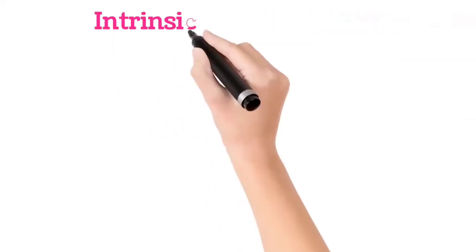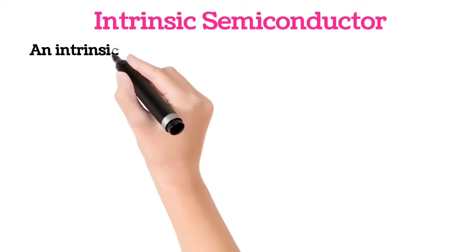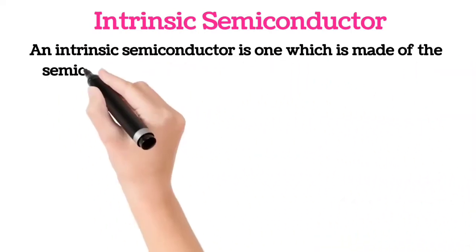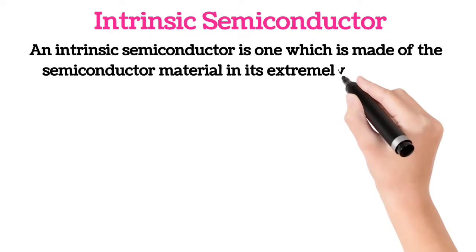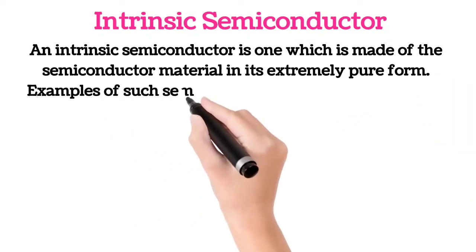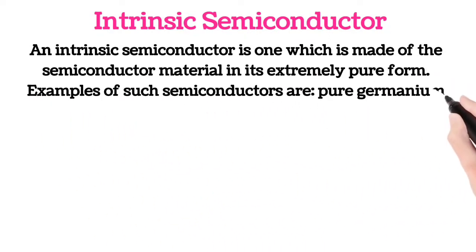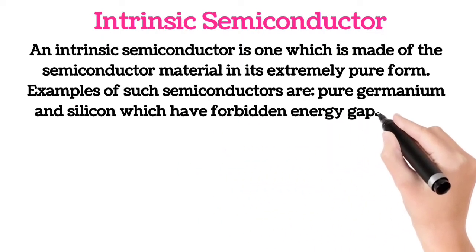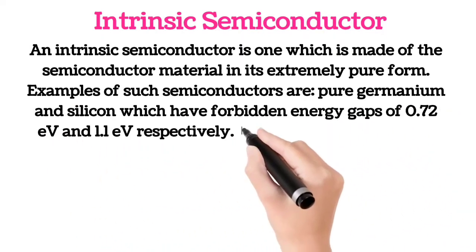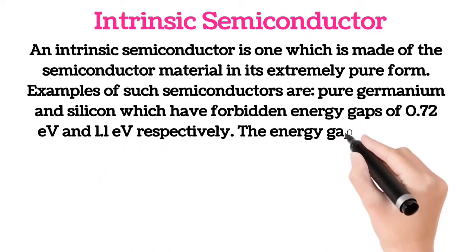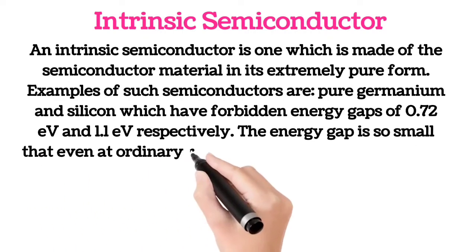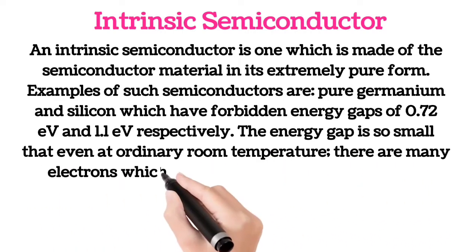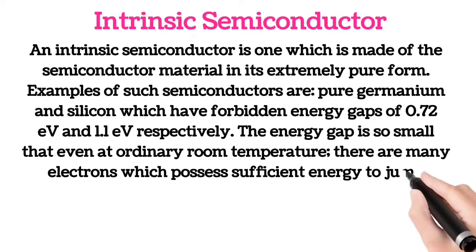An intrinsic semiconductor is one which is made of the semiconductor material in its extremely pure form. Examples of such semiconductors are pure germanium and silicon, which have forbidden energy gaps of 0.72 electron volts and 1.1 electron volts respectively. The energy gap is so small that even at ordinary room temperature, there are many electrons which possess sufficient energy to jump across the small energy gap between the valence and the conduction bands.